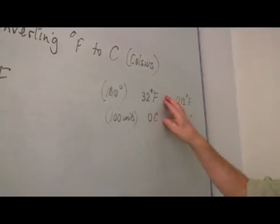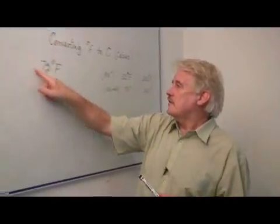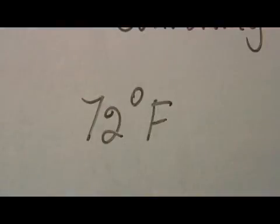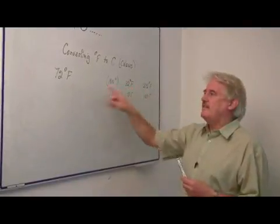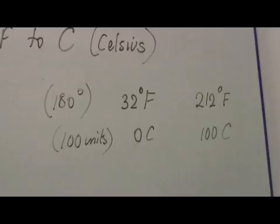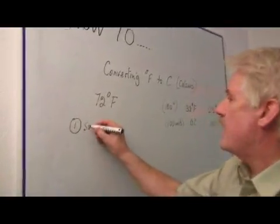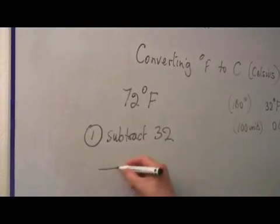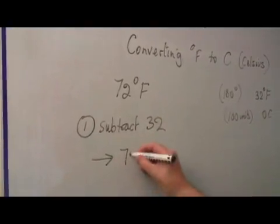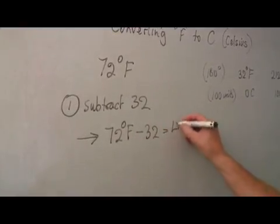It's these two facts that we're going to use to do our conversion. Now, the first thing to note is that 72 Fahrenheit, we have to reduce this by 32, because in that 72 degrees is 32 Fahrenheit degrees to get it to 0. So the first thing we do is subtract 32, which gives us 72 degrees Fahrenheit minus 32, gives us a number 40.